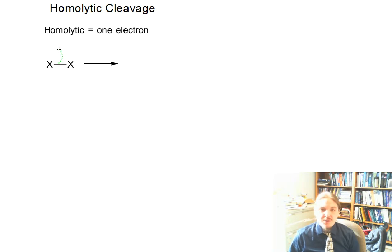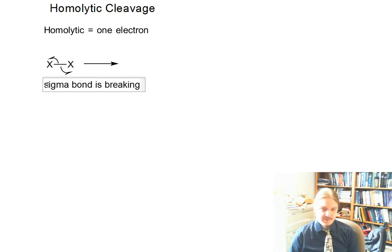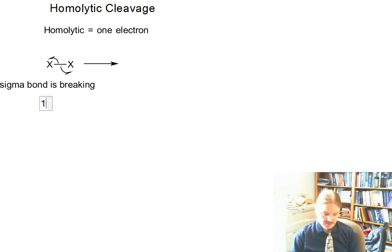So in homolytic cleavage, what is happening is that one electron, or the sigma bond is breaking. And one electron goes with each atom.